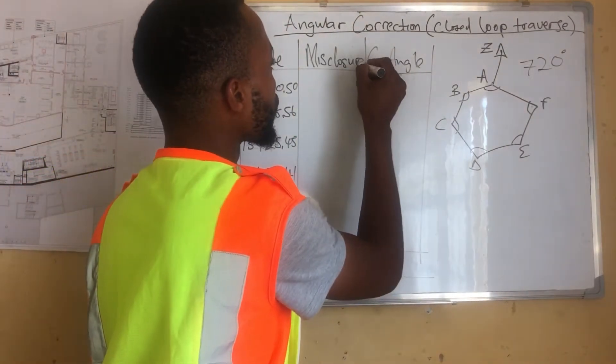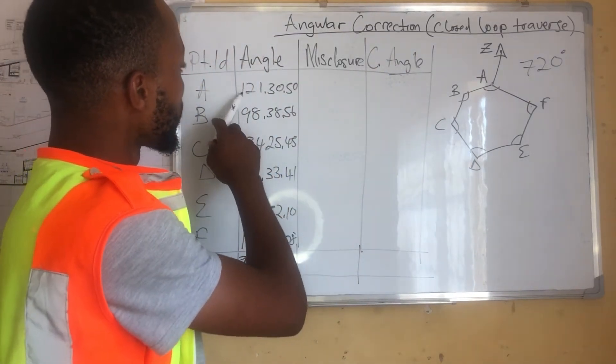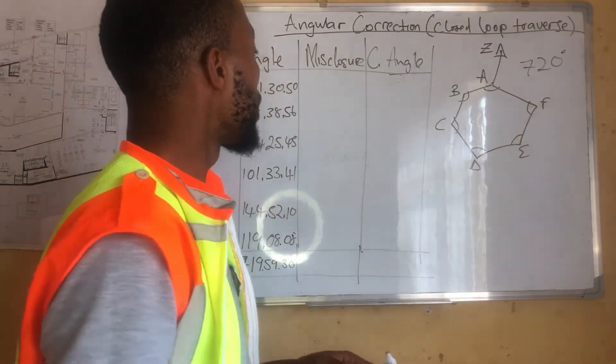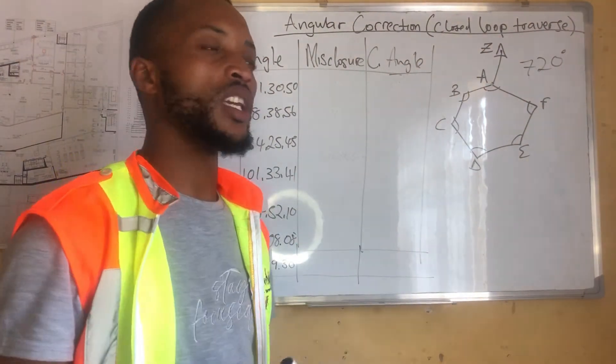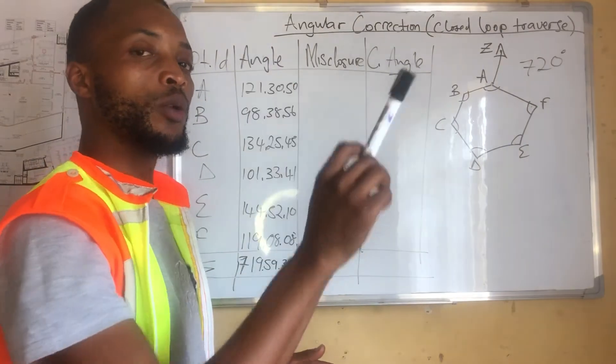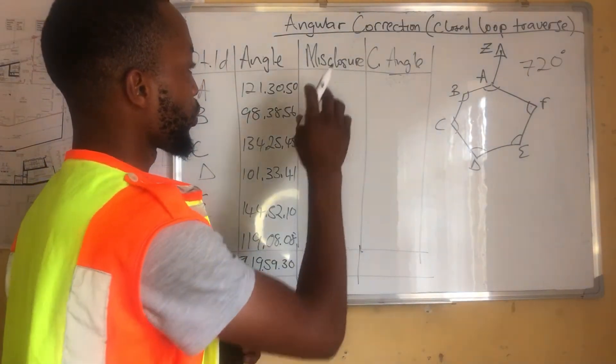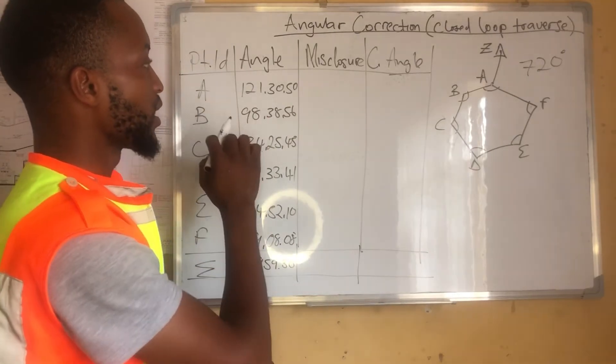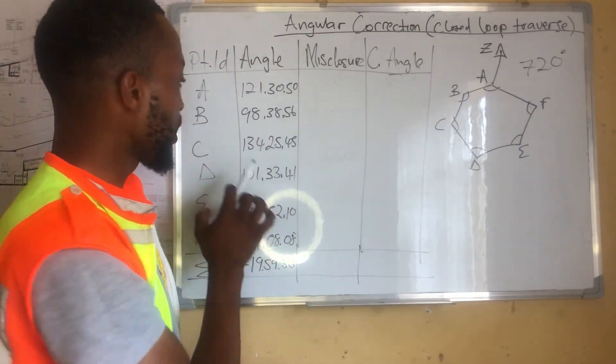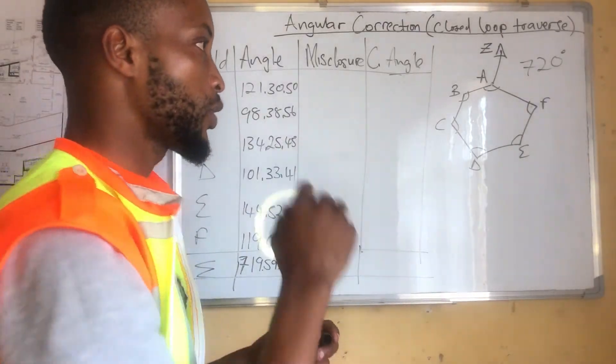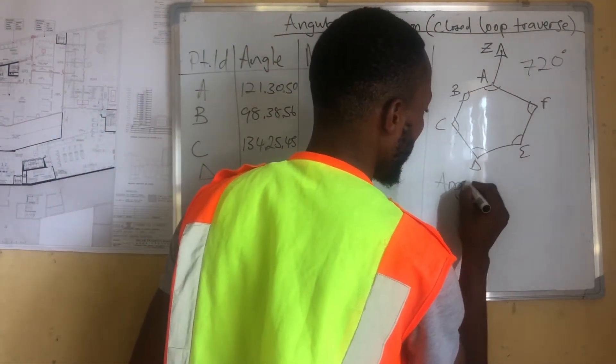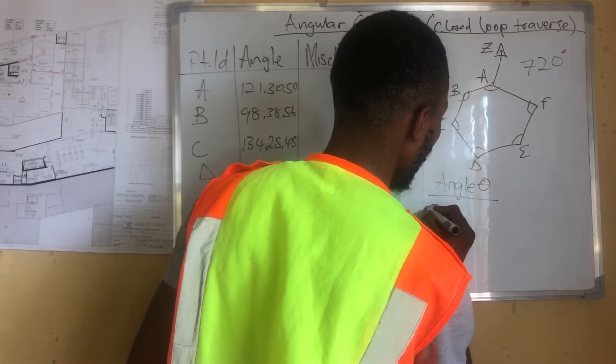And the misclosure needs to be shared amongst the angles that we have, our six angles. In this case, I'm going to use the weighted average. What do I mean by weighted average is that the bigger the angle, the bigger the share that it gets from the misclosure. For example, 121 degrees, it gets more when the misclosure is being shared compared to the 98 degrees.